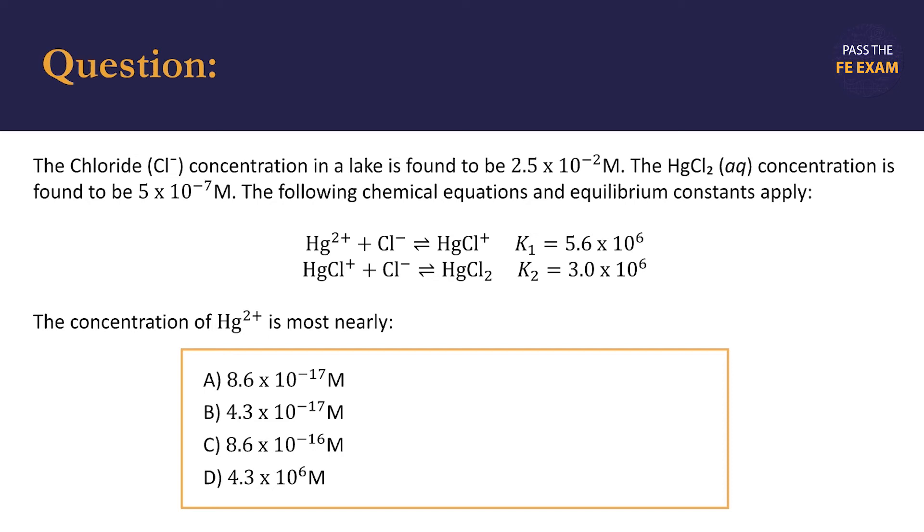Our four choices are A, 8.6 times 10 to the negative 17 M, B, 4.3 times 10 to the negative 17 M, C, 8.6 times 10 to the negative 16 M, and D, 4.3 times 10 to the positive 6 M. We should immediately realize, based on our general chemistry knowledge, that answer D is incorrect. The solubility this high is impossible. We need to solve this problem to decide between answers A through C.